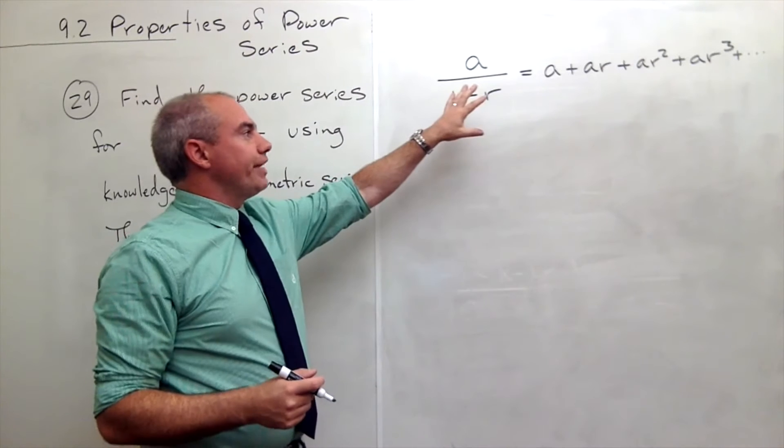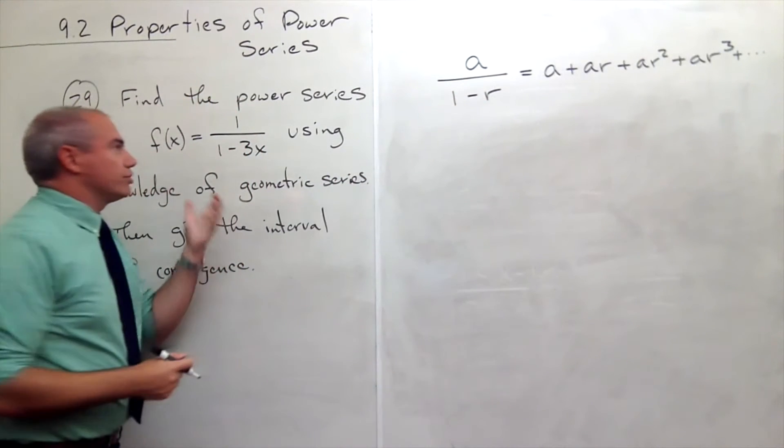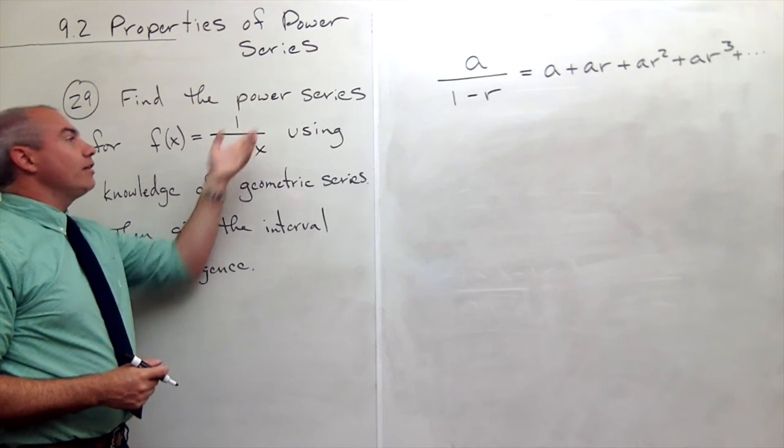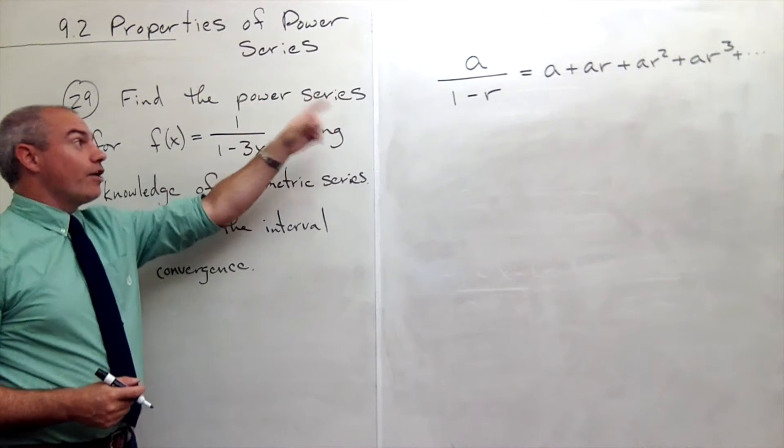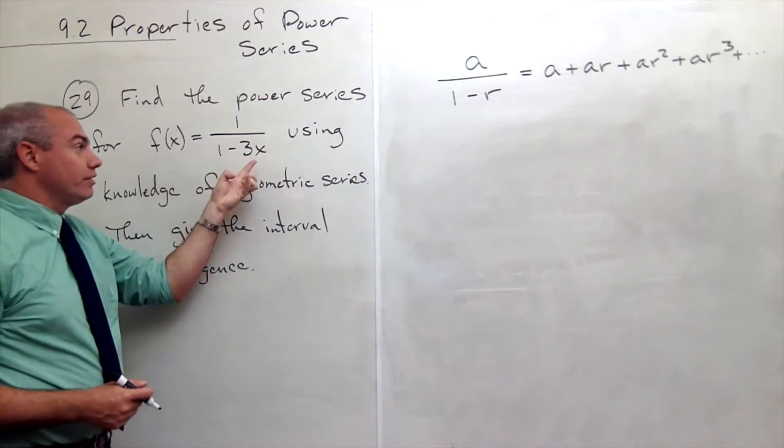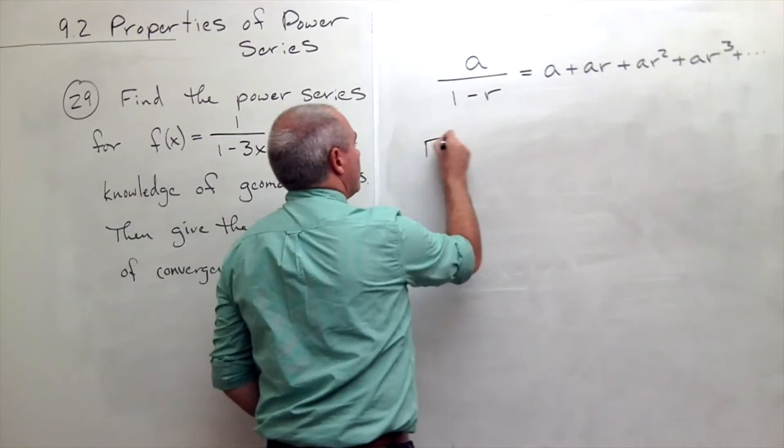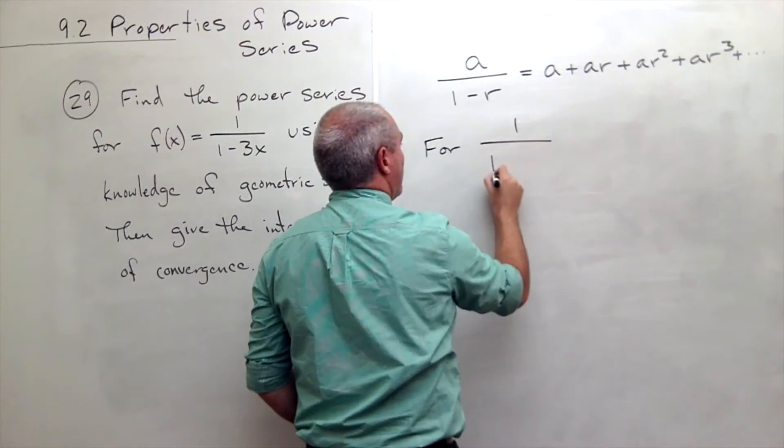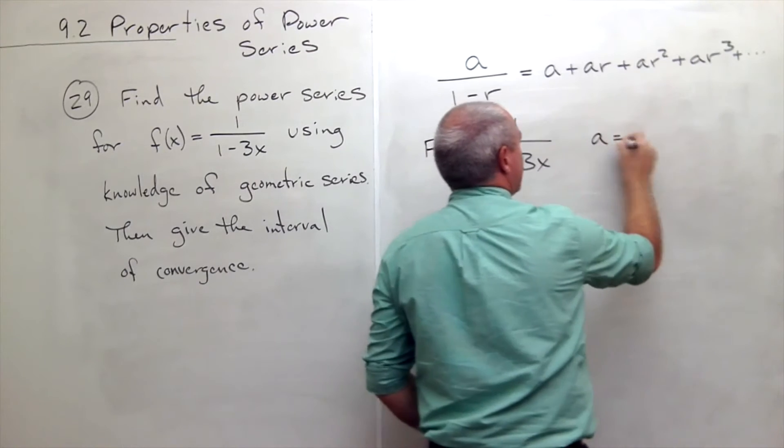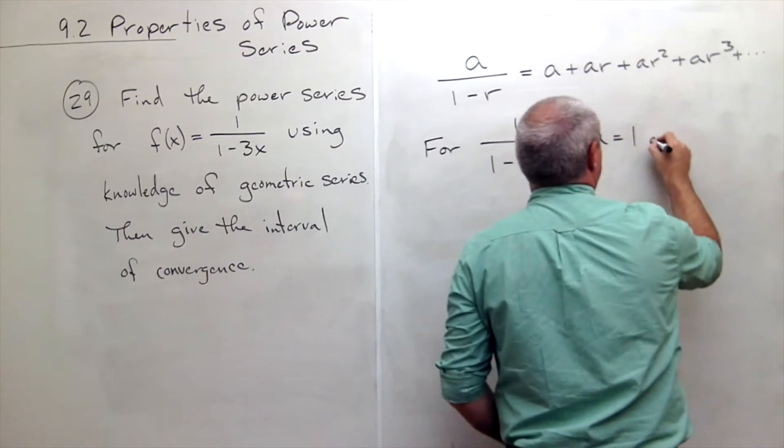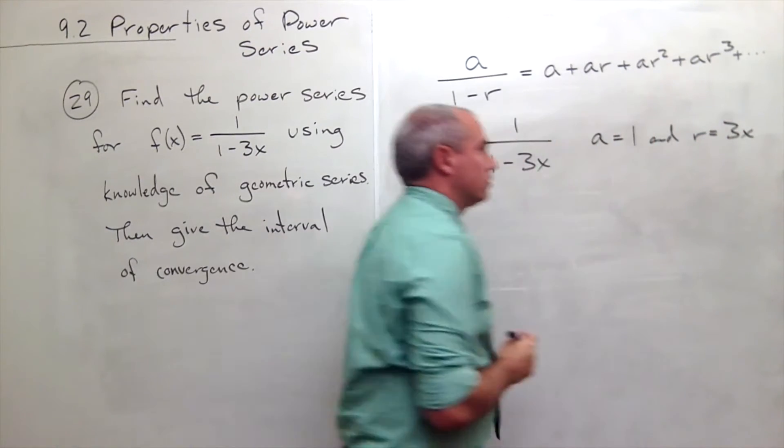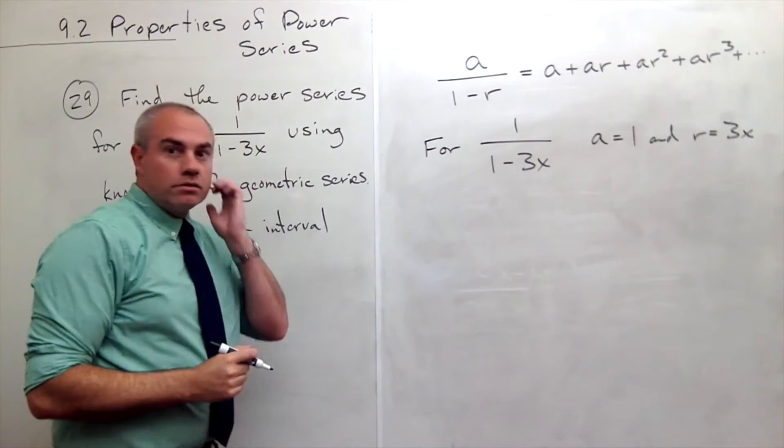If I know this, am I able to generate a power series for this function? Well, I look at it and say that looks a lot like a/(1-r). What would a be in the case of my function? So for 1/(1-3x), it's kind of like a is 1 and r is 3x.